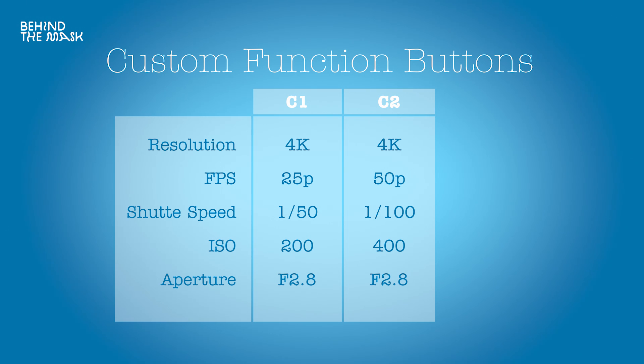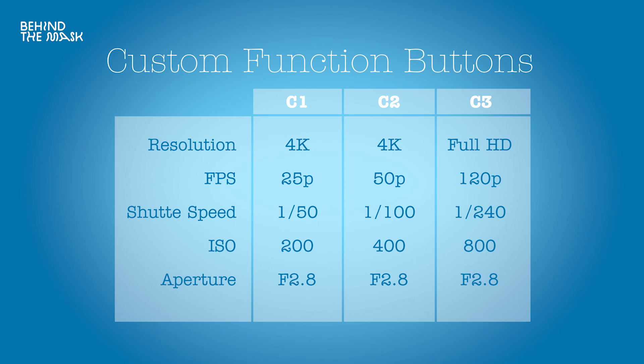And then on C3 I have slow motion — let's say HD — with 120 frames a second, 1/240th shutter speed, and the according ISO and aperture that I desire. So underwater I just have to switch between these three settings. The only things I have to worry about underwater are whether my exposure is right, and resetting my white balance for every meter I go down or up. We'll get into white balance and all the other settings in upcoming videos.